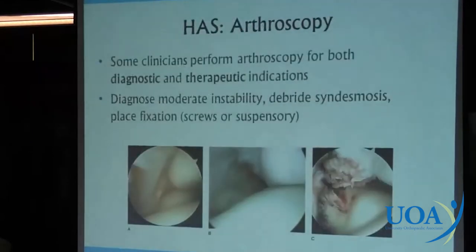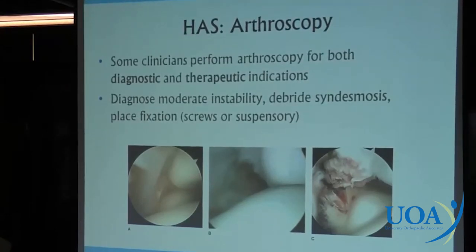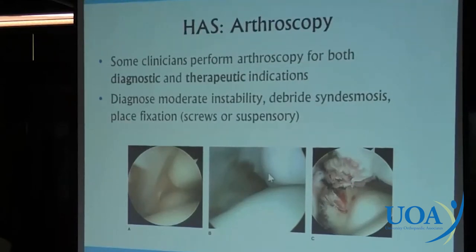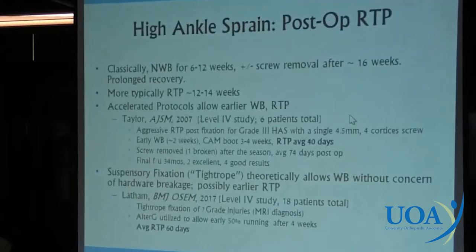Ankle arthroscopy is an option — some people use it immediately when a high ankle sprain is suspected. It can help diagnose the injury, and if unstable enough you can debride the torn syndesmosis, comparing it to the normal side, and then perform fixation.